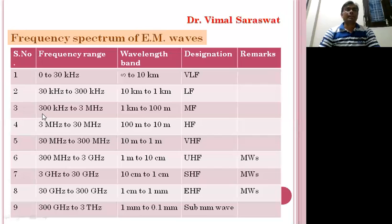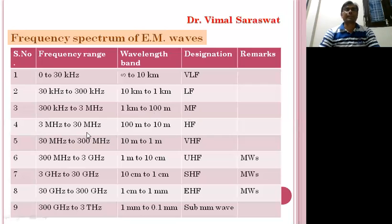The next wave ranges in frequency from 300 KHz to 3 MHz and in wavelength from 1 km to 100 m. This wave is the wave of medium frequency. Another one ranges from 3 MHz to 30 MHz in frequency and from 100 m to 10 m in wavelength. This wave is the wave of high frequency.